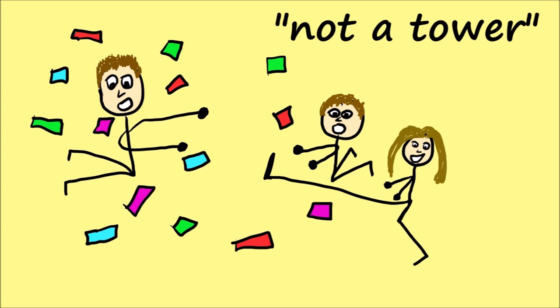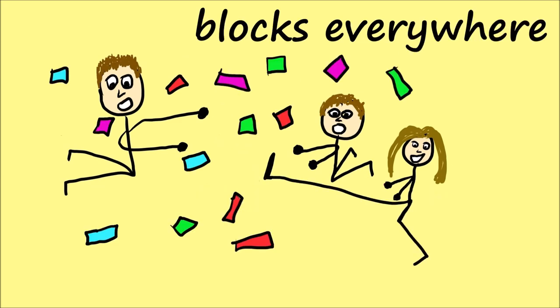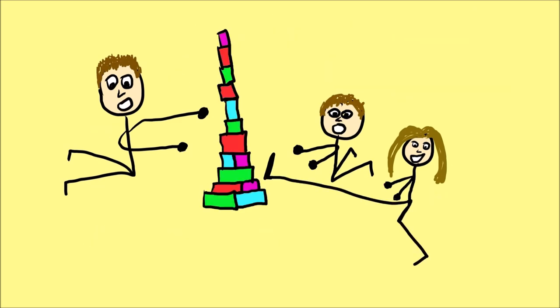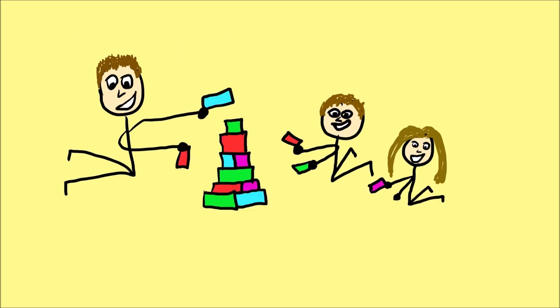The chances of these blocks taking on the shape of a tower just by sheer randomness is highly unlikely. The more common outcome would be blocks everywhere. So that's why it only takes your three-year-old one second to destroy a tower, but ten minutes to build one.